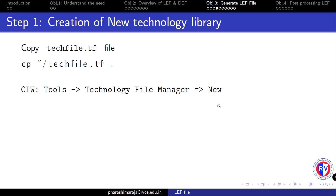We will also learn how a technology library can be created from a given ASCII technological file that has a .tf extension. This tech file will be available under the home directory, and you can copy it to your current working directory using the provided command. This is essentially an ASCII file that has been modified to help us create a new technology.